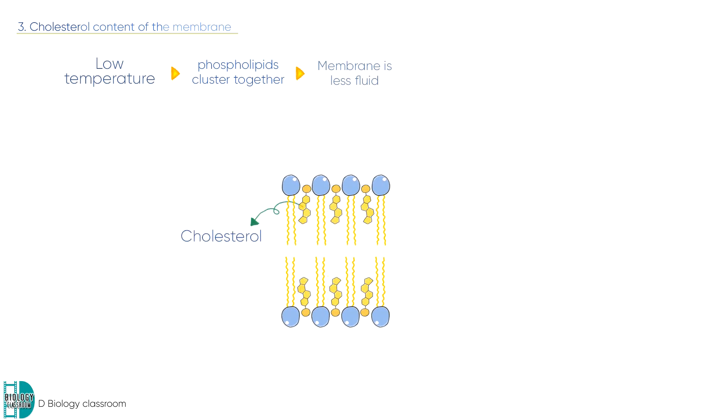Cholesterol in the phospholipid bilayer fills in between the phospholipids, disrupting their intermolecular interactions. When there are fewer such interactions, the fluidity increases.